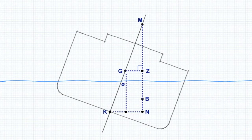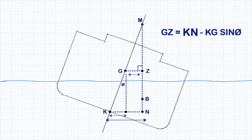The final formula to determine the righting lever using KN values is GZ equals KN minus KG times the sine of the angle of heel.